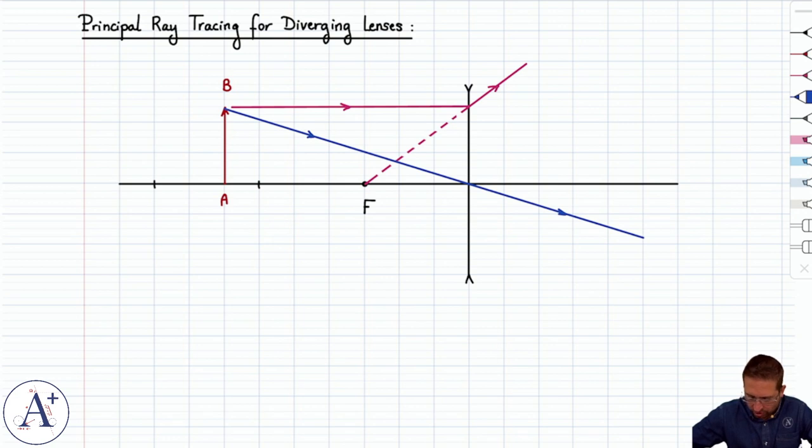And here the emerging rays appear to intersect right here at B' and this is going to be our image. It's A' B' and what you get is an upright virtual image that is reduced.